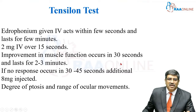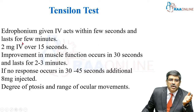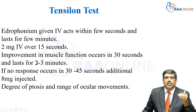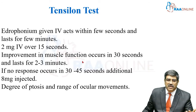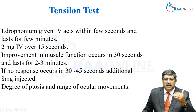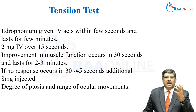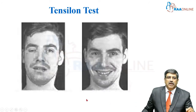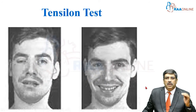Coming to the tensilon test, where you give edrophonium — it acts for a few seconds and lasts only for a few minutes. You inject 2 milligrams IV over 15 seconds, and immediately you can see improvement in muscle function, which lasts for 2 to 3 minutes. If no response occurs in 30 to 45 seconds, an additional 8 milligrams can be injected. We look for the degree of ptosis and the range of ocular movement — whether the ptosis has come down and the range of ocular movement has improved. Here you can see the ptosis; after injection of edrophonium, the eye is open completely.